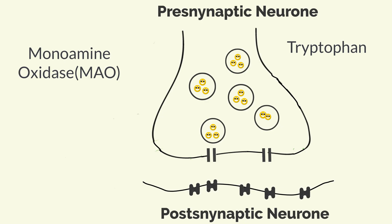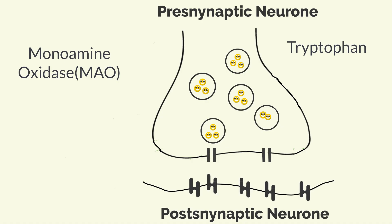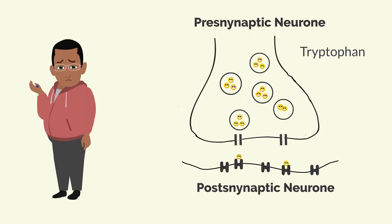The question then becomes: what if we could, by some mechanism, prevent the serotonin from going back into the presynaptic neuron and have it stay longer at the postsynaptic neuron? This will obviously result in more serotonin available to interact with the serotonin receptors, thereby prolonging that elevation of mood — and this is exactly what happens when Zoloft is in the system.